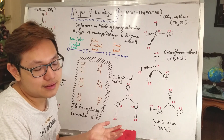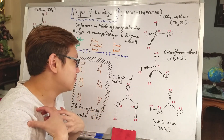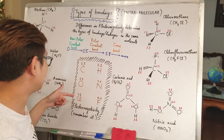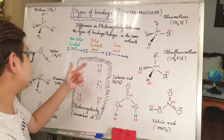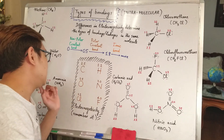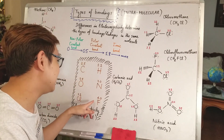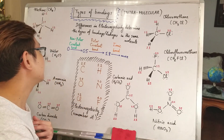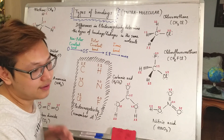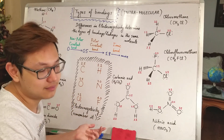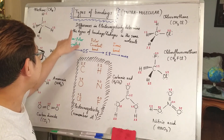Electronegativity is the ability of an atom to attract electrons from other places to itself. I've written down the six most common elements we encounter in chemistry: carbon, hydrogen, oxygen, nitrogen, chlorine, and fluorine. The one with the highest electronegativity number is the most attractive to electrons — the most electronegative. I recommend you remember these six numbers because they will be very useful in organic chemistry and your later study.